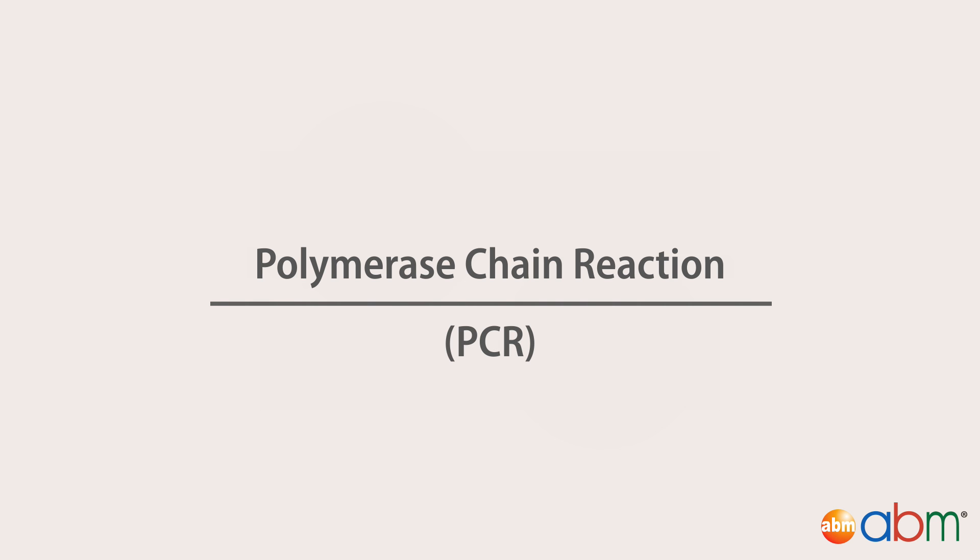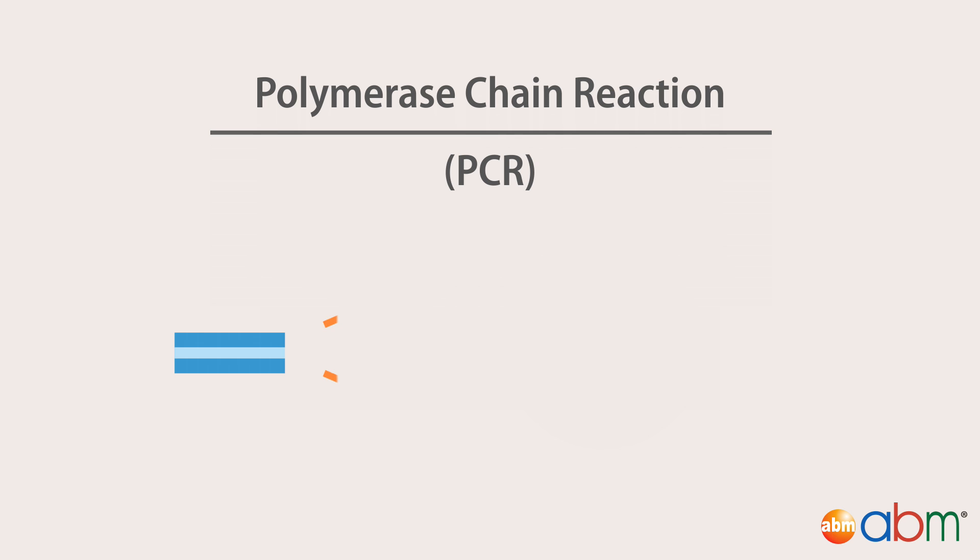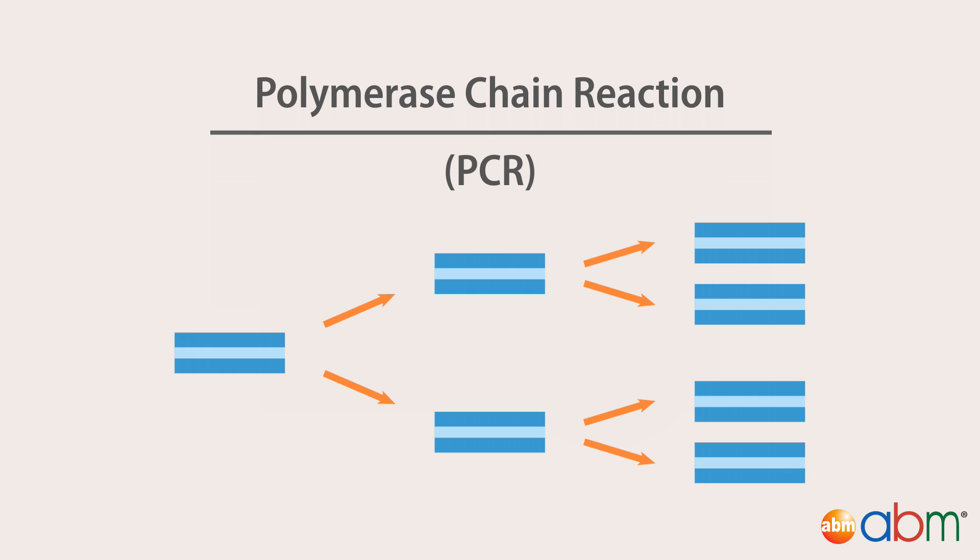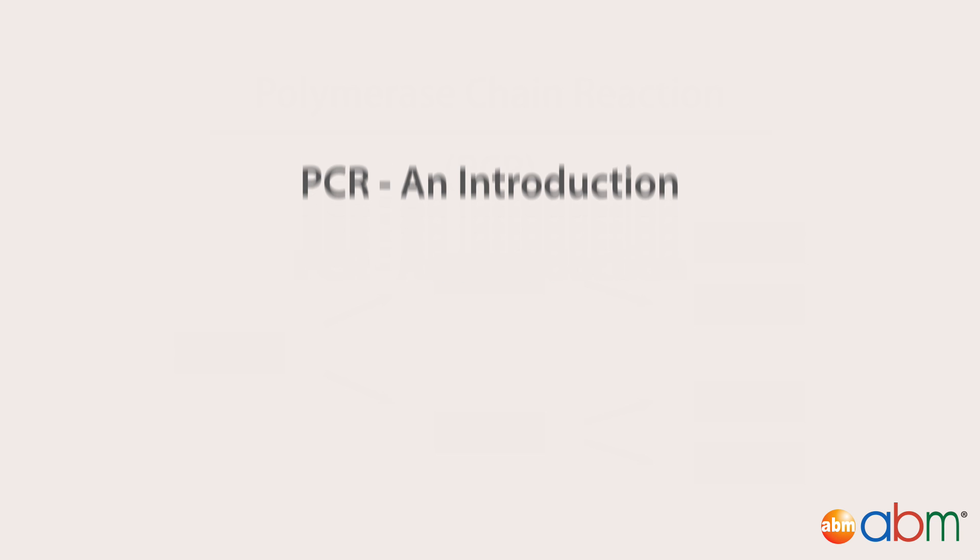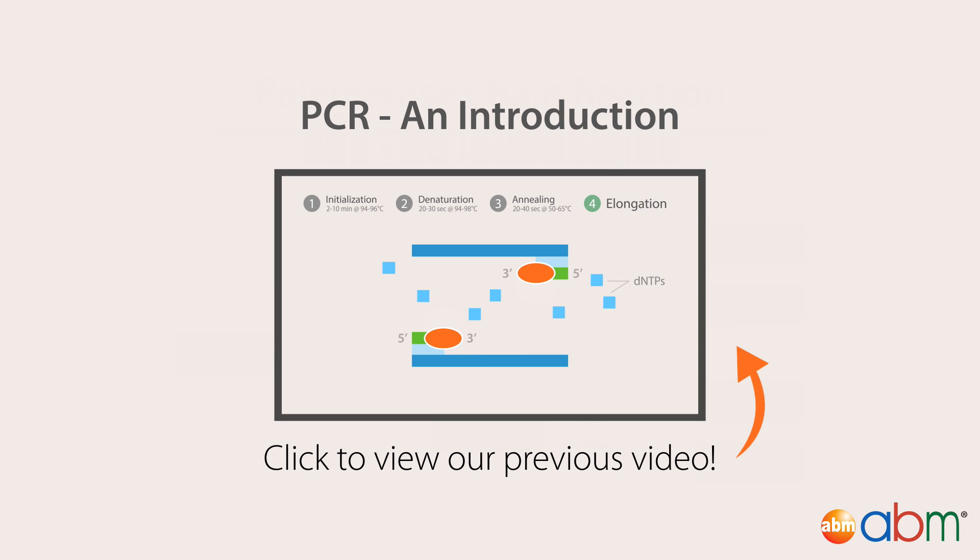One of the most fundamental technologies in genetic and molecular research is the polymerase chain reaction, also known as PCR. PCR utilizes the ability of DNA polymerase to replicate DNA strands by amplifying a large amount of DNA from a small amount of nucleic acids. To learn more about the principles of PCR, we invite you to watch our PCR introduction video before continuing with this one.